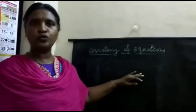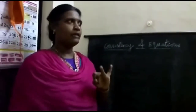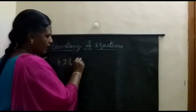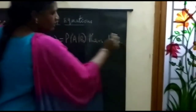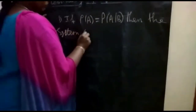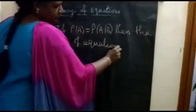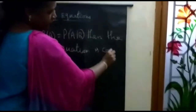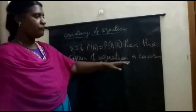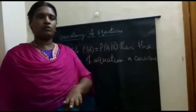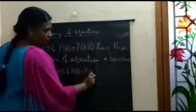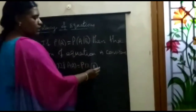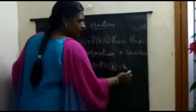For consistency of a linear equation, we find the rank of A and the rank of the augmented matrix. First case: if rank of A is equal to rank of the augmented matrix, then the system of equations is consistent.